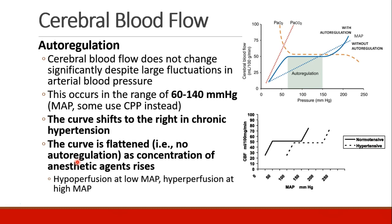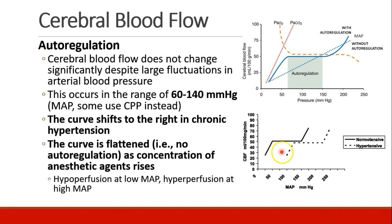Cerebral autoregulation is the idea that blood flow to the brain does not change very much even if there's a large fluctuation in arterial blood pressure. In the brain, this occurs in the range of about 60 to 140 millimeters of mercury MAP. Some people use cerebral perfusion pressure when describing cerebral autoregulation. The curve shifts to the right in patients who are chronically hypertensive, so a MAP of 60 might be far too low for a chronic hypertensive — they've fallen off the lower end of the curve and are hypoperfusing their brain.